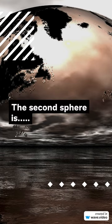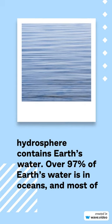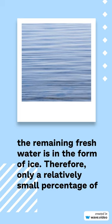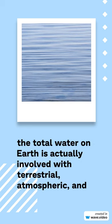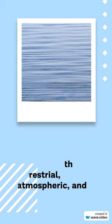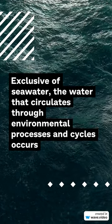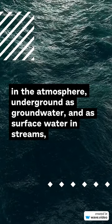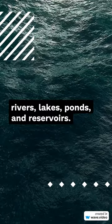The second sphere is the hydrosphere. The hydrosphere contains Earth's water. Over 97% of Earth's water is in the ocean, and most fresh water is in the form of ice. Therefore, only a relatively small portion of the total water on Earth is available. Water circulates through environmental processes in the atmosphere, as groundwater underground, and as surface water in streams, lakes, ponds, and other bodies.